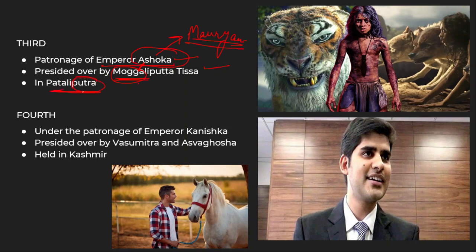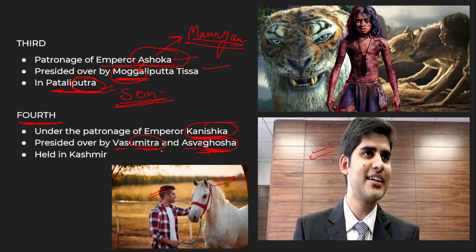The third council was held in Patliputra. Ashoka was the Putra of the jungle — jungle ka beta — so Mowgli and Putra, all connected. The fourth Buddhist council was held under the patronage of Emperor Kanishka. Kanishk Kataria — the UPSC rank holder — is my code. It was presided over by Vasu Mitra and Ashwa Ghosh. Kanishk Kataria is very fond of horse riding — Ghosh means ghoda (horse) — and Mitra means friend. So Kanishk is friends with his horse. The council was held in Kashmir.